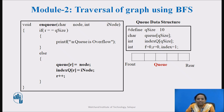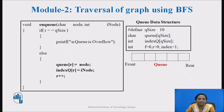Queue operations are enqueue, dequeue, and checking whether the queue is empty or full. The enqueue function is defined to perform the enqueue operation — inserting a new element in the queue with parameters character node and integer node index. In the enqueue operation, we check if the queue is full: if rear reaches max size, then the queue is full. If the queue is not full, we insert the index information into the queue and the node information into the index queue, then increment rear by 1 to point to the next location.